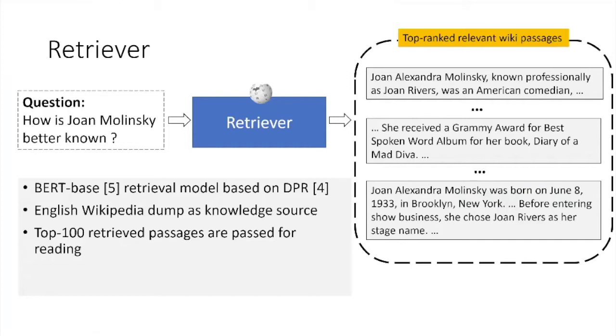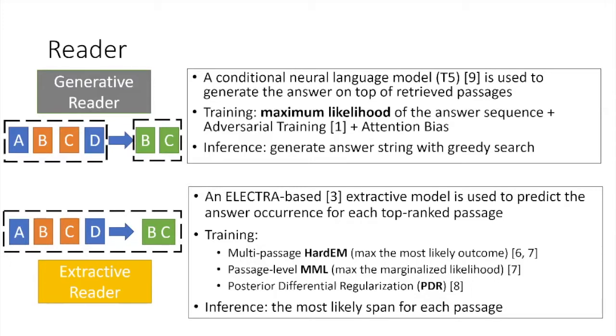Given the input question, the goal of the retriever is to search over the English Wikipedia and return a top-ranked list of relevant passages. Following recent work, we use a BERT-based dense retriever and keep the top 100 passages for reading. Motivated by the recent development of both extractive and generative readers, we adopt a hybrid approach for effectively reading over relevant passages by leveraging the state-of-the-art text encoders, specifically T5 for generation and Electra for extraction. In order to learn effectively from the noisy input, we develop multiple training strategies.